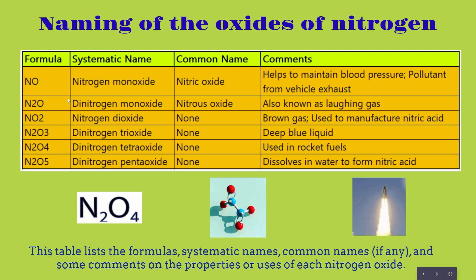For N2O — dinitrogen monoxide — since there is a 2 on nitrogen, we represent this as 'di', giving us dinitrogen monoxide since there is only one oxygen. The common name for this is nitrous oxide, also known as laughing gas. For NO2, which is nitrogen dioxide, there is no common name. It appears as a brown gas and is used to manufacture nitric acid.